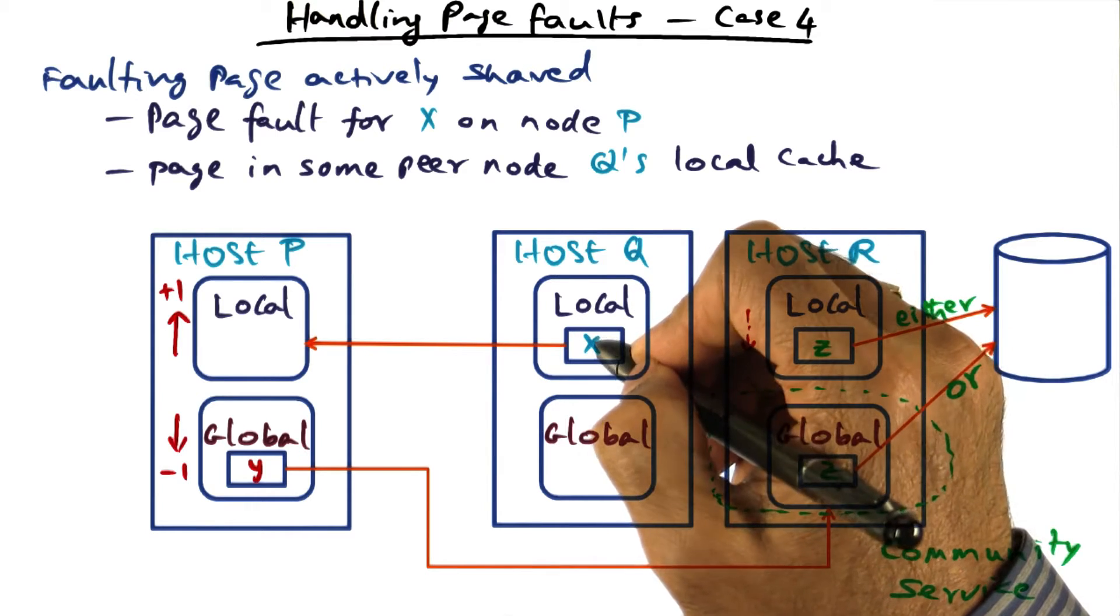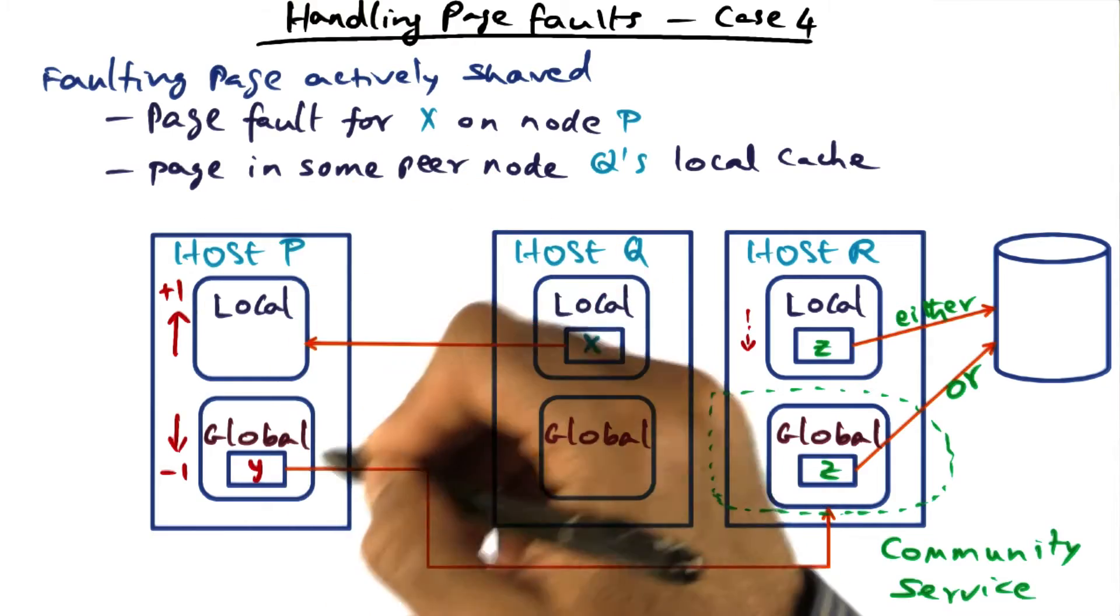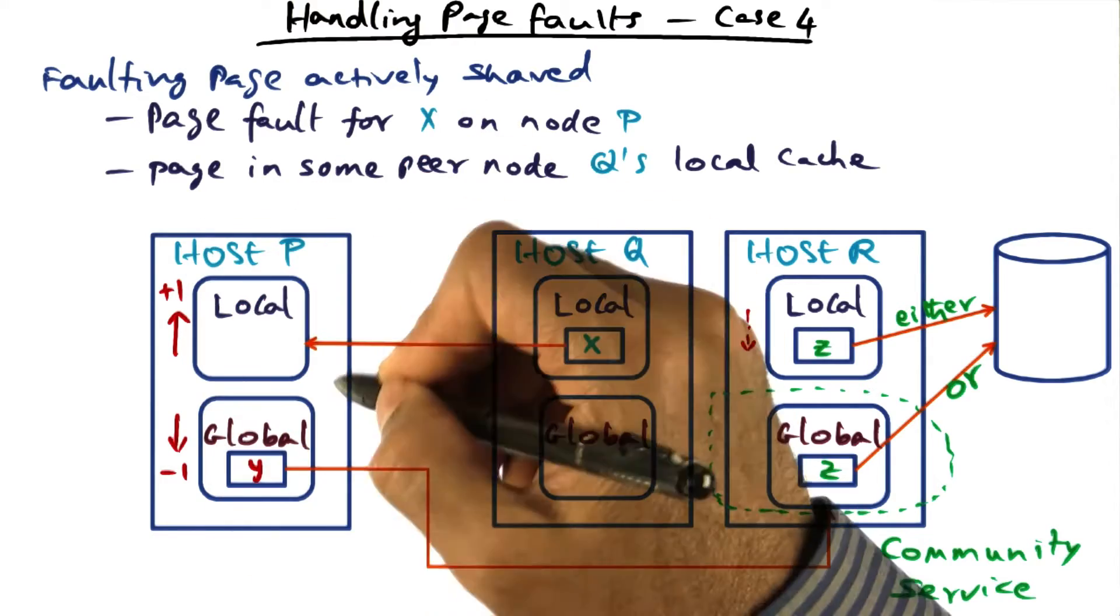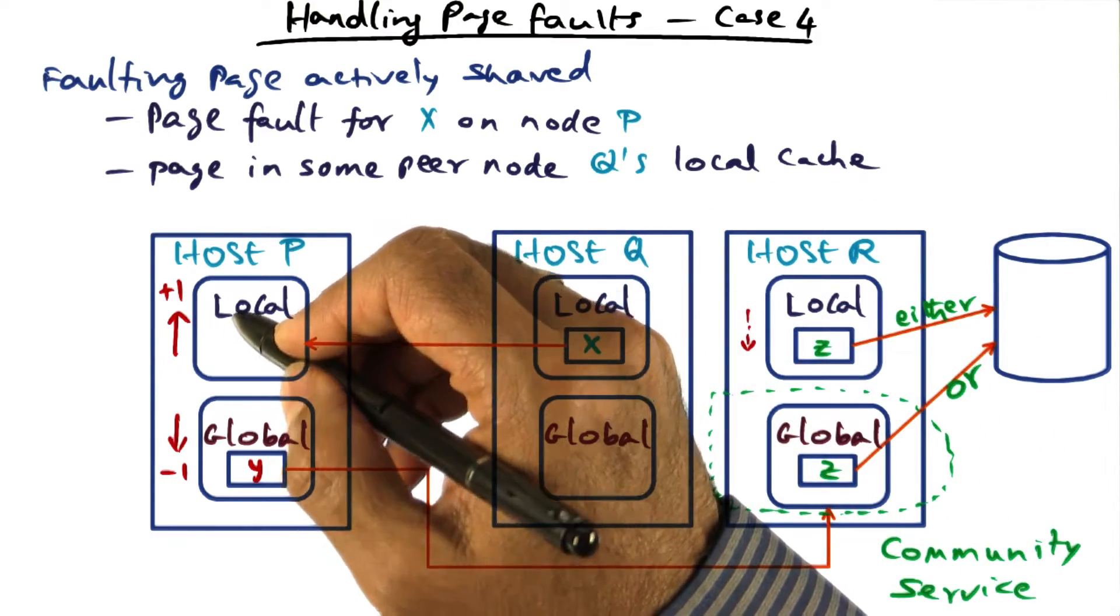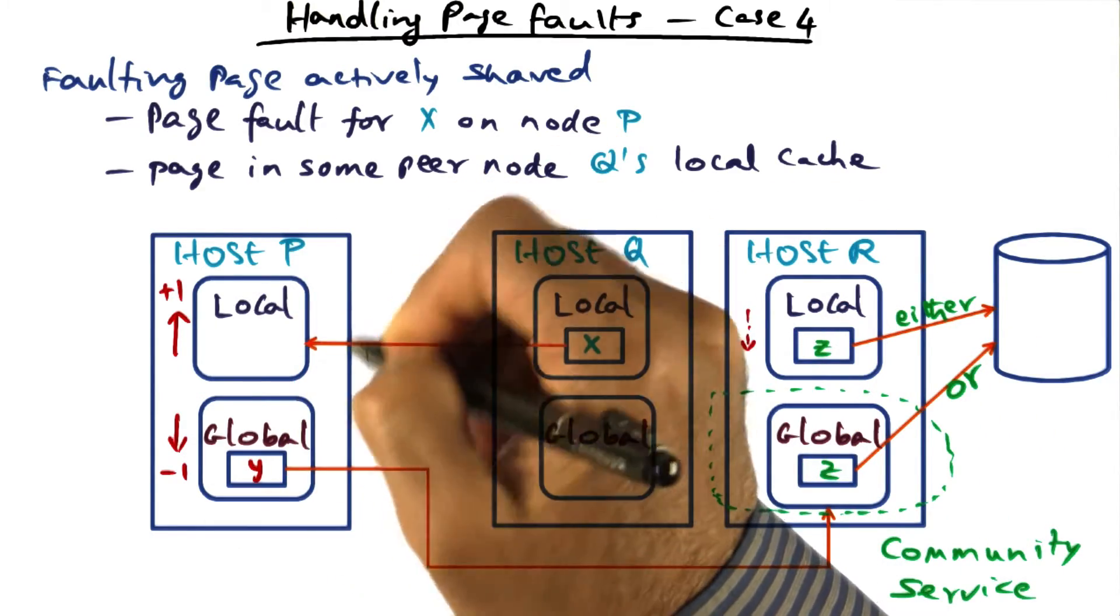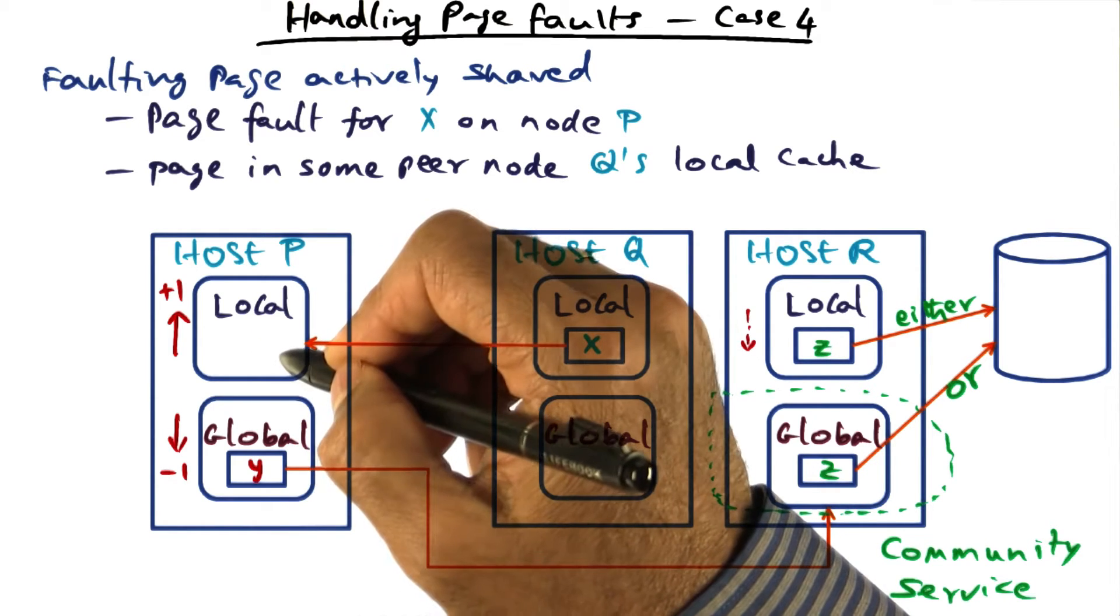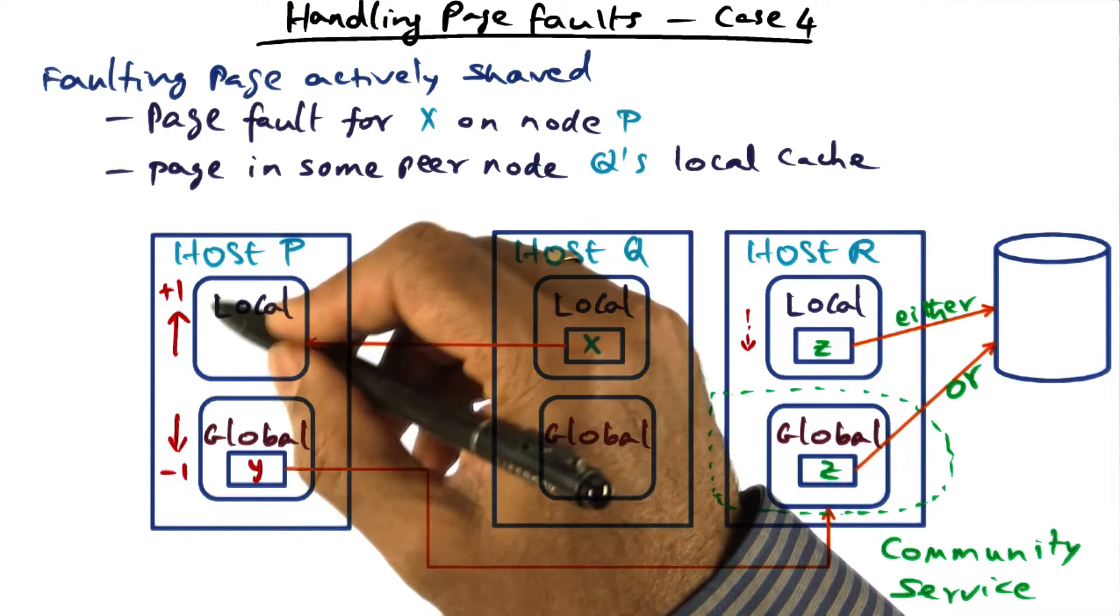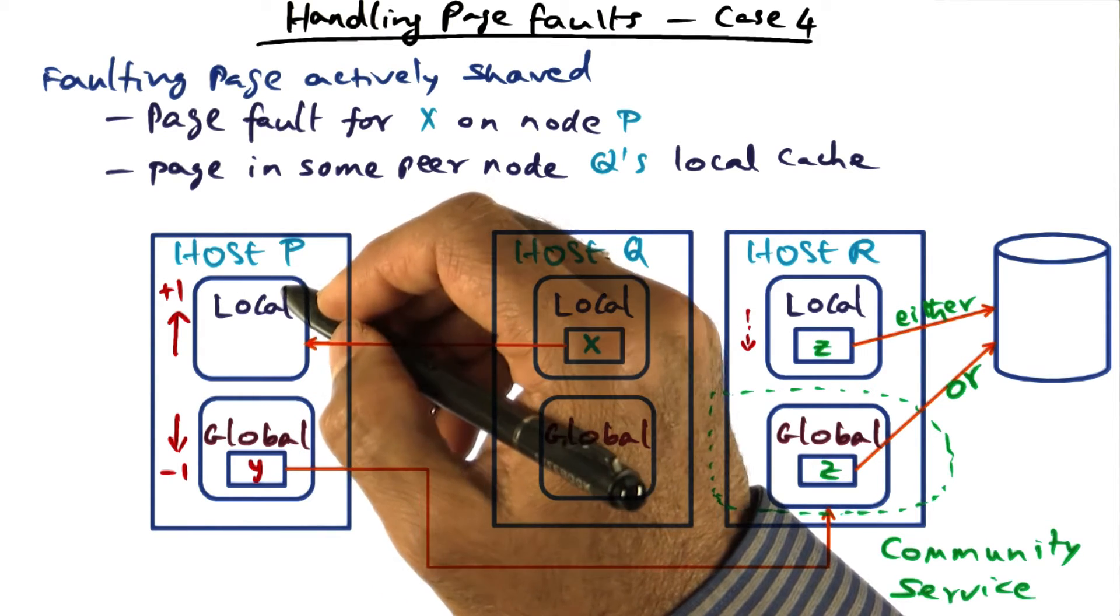We want to make a copy of this page into the local part of host P so that the faulting process on host P will have access to the page X. Again, we have the same situation that the working set on host P is increasing. The local part has to allocate one more page in physical memory for the active working set for the processes on P.